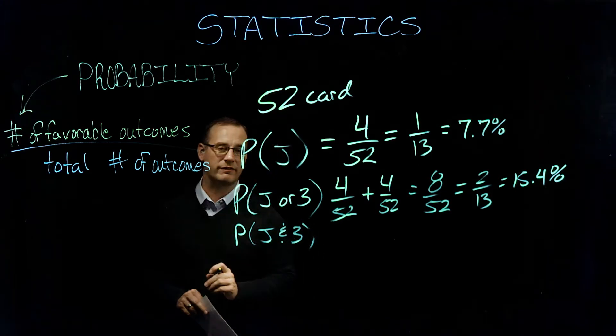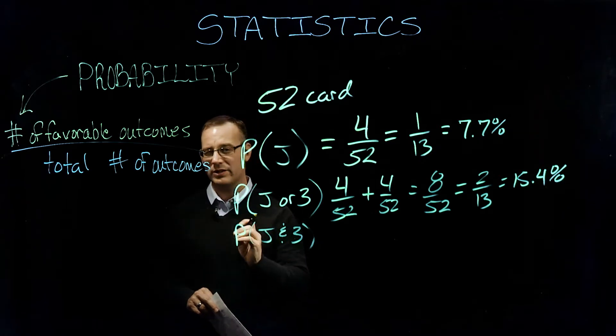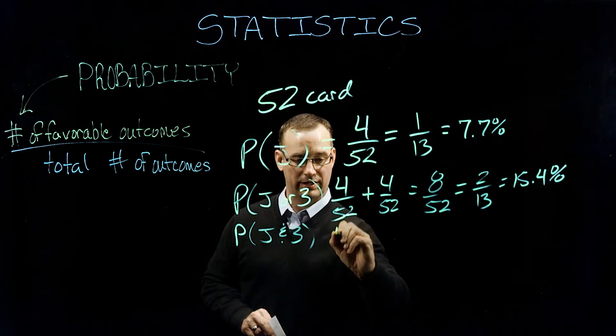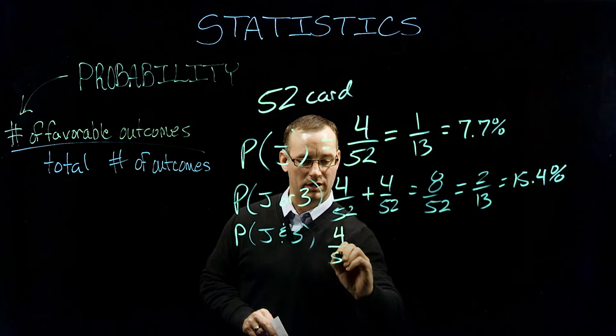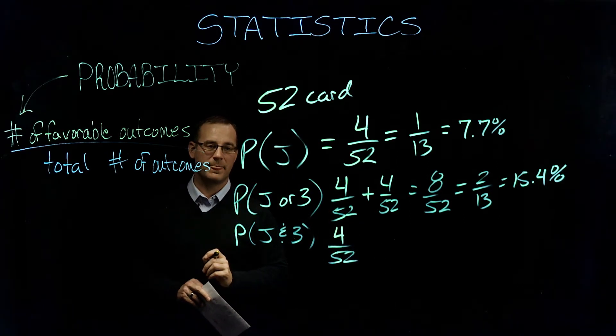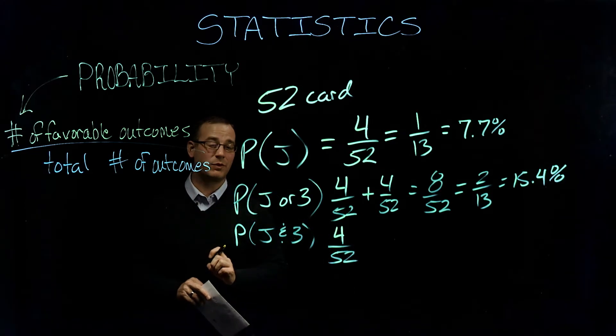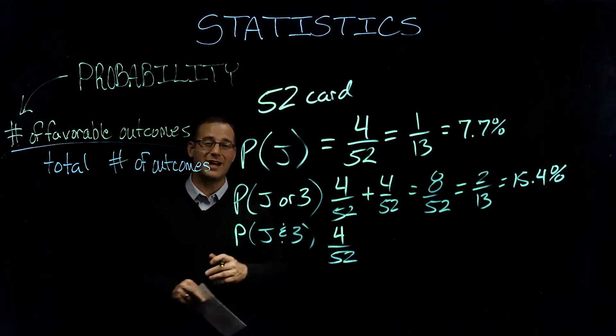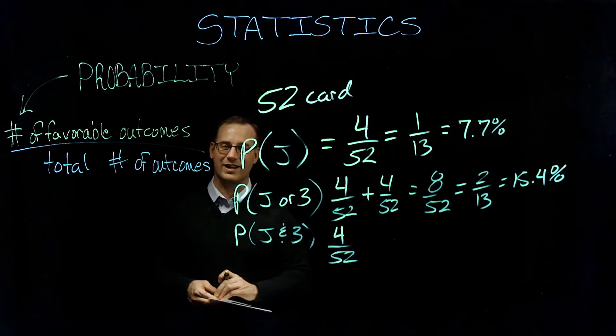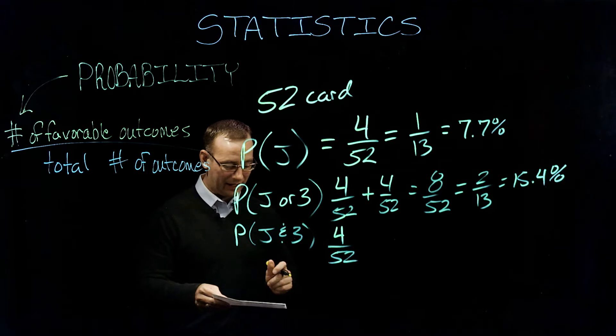Let's just look at the jack first. So in essence, we're hopefully going to draw a jack four out of 52 times. Now, if we draw one of those jacks four out of 52 times, how many cards are left in the deck? Right, that's 51 cards. So then the probability.